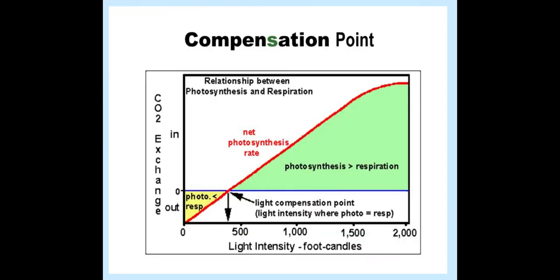I have seen this on a graph a couple of times where we need to know about the compensation point and the relationship between photosynthesis and respiration on a graph. Here we have carbon dioxide in and out of the organism, normally a plant, and here we have the light intensity.